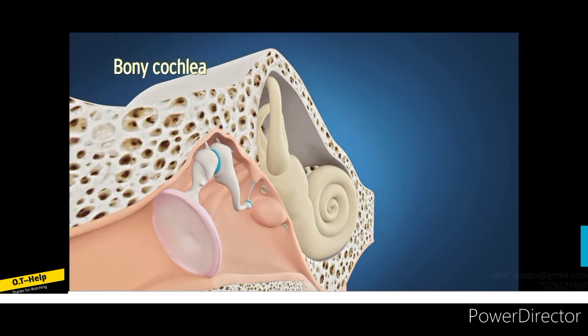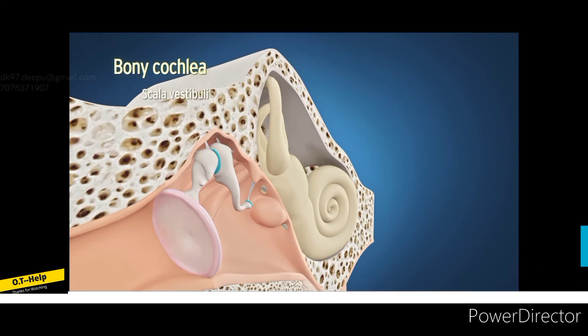At the base of the cochlea, the opening of scala tympani known as fenestra cochlea is closed by the secondary tympanic membrane, whereas the scala vestibuli is continuous with the vestibule.